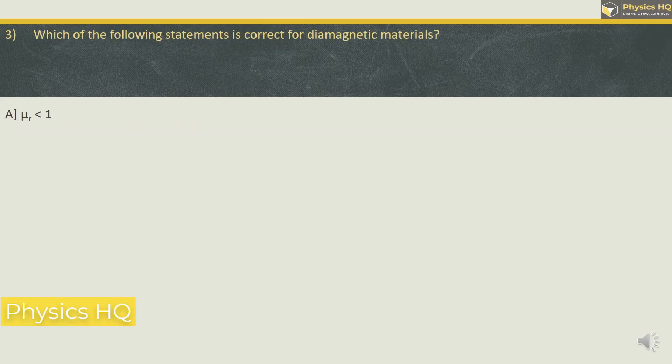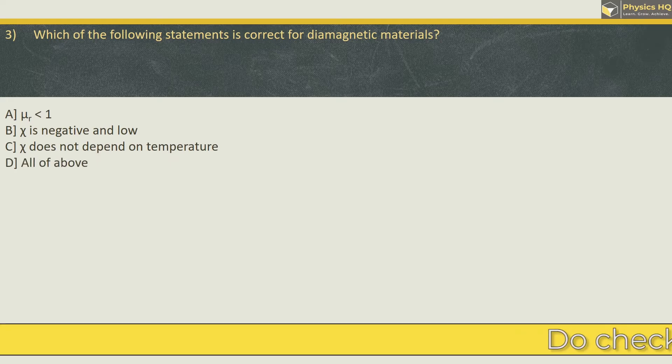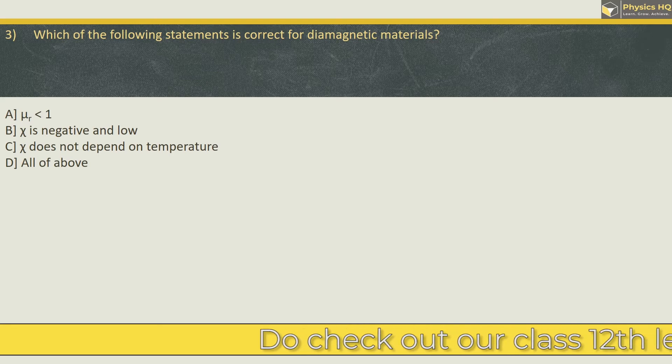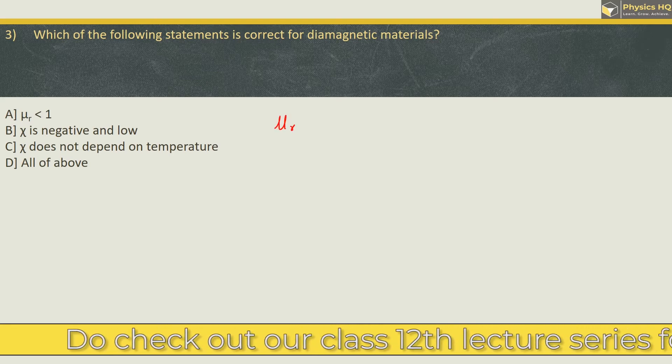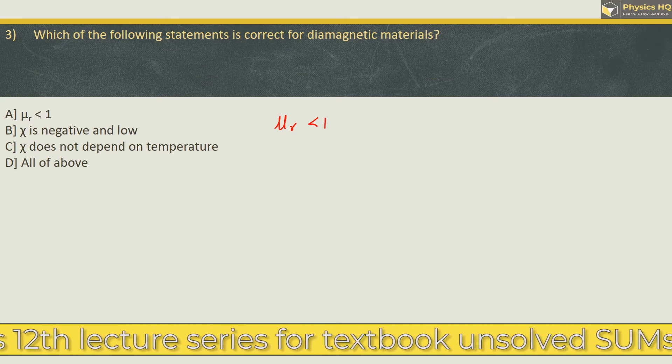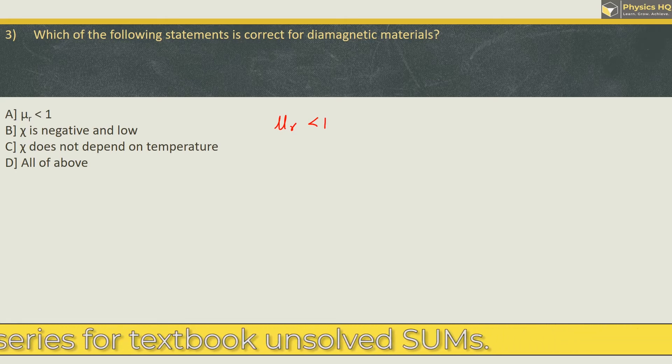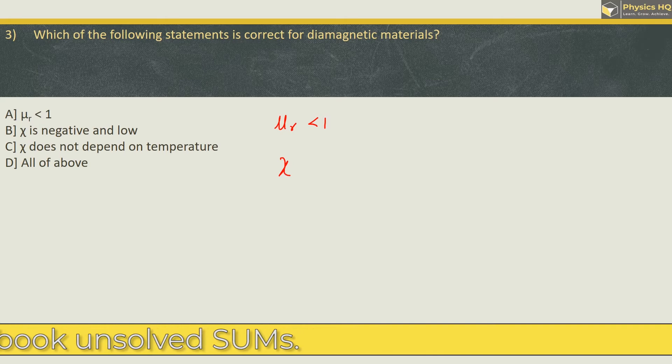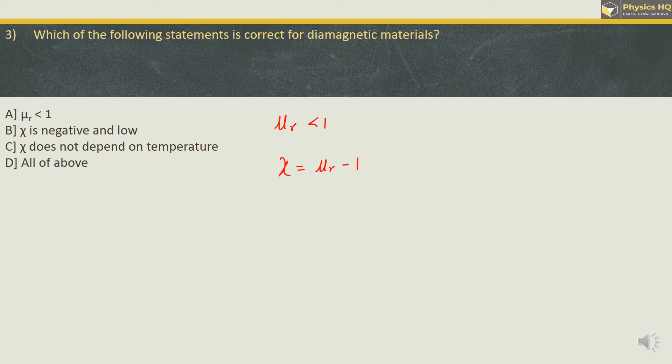Which of the following statement is correct for diamagnetic materials? Mu r less than 1. Magnetic susceptibility is negative and low. It does not depend on temperature or all of the above. Now for diamagnetic material, the relative permeability is less than 1. It does not show the property of magnetism. Now because of this magnetic susceptibility which is given by the formula mu r minus 1, it becomes negative since this is less than 1.